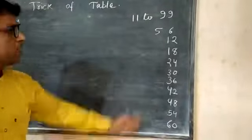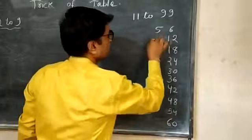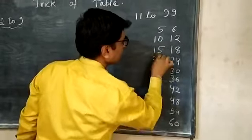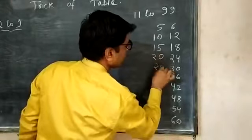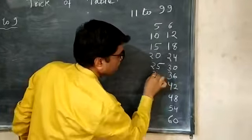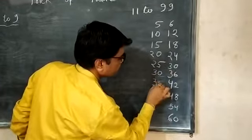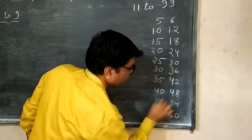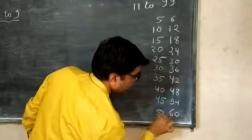Similar way we will write the table of 5. What is that? 10, 15, 20, 25, 30, 35, 40, 45, and 50.